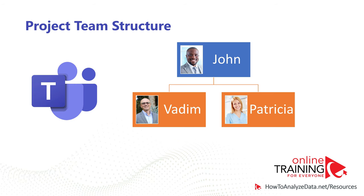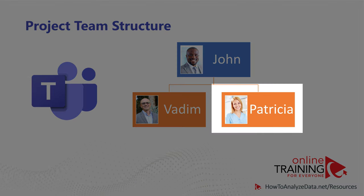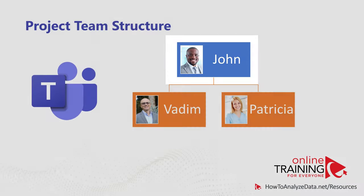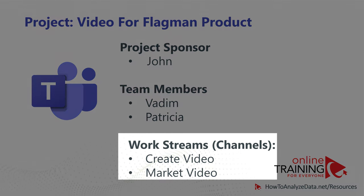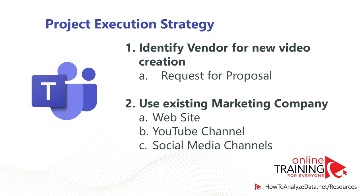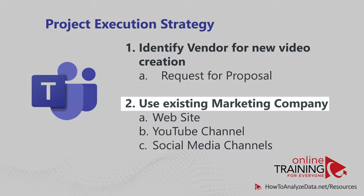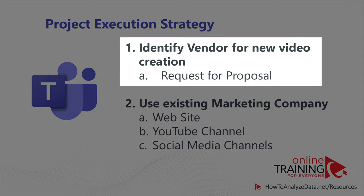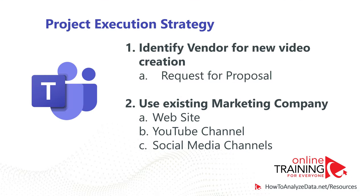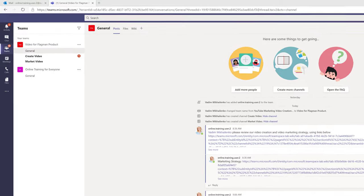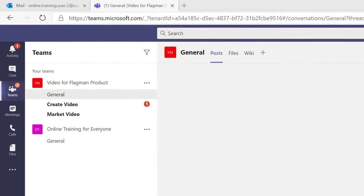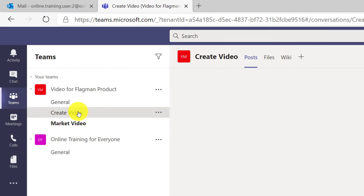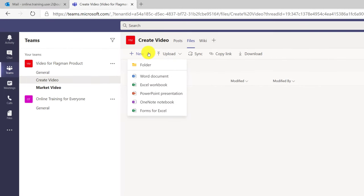We are working on the project together using Microsoft Teams. Patricia is team lead and Vadim is team member, both reporting to John. We've identified two work streams — create the video and market the video. Our strategy is to find a new vendor to create the video and use an existing vendor to market it. To be compliant with laws and regulations, we are required to create a request for proposal, reach out to vendors, evaluate the RFP, and then select the vendor. Because both team members work remotely, we decided to use Microsoft Teams' collaboration features to develop the RFP together. Patricia navigated to the Create Video channel, clicked Files, and clicked Start New Document, choosing Word and naming it 'Request for Proposal.docx.'